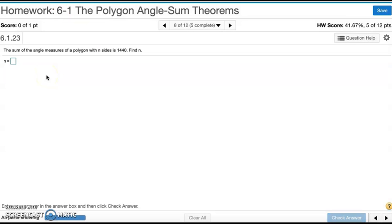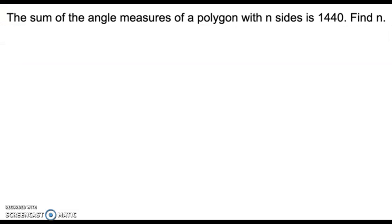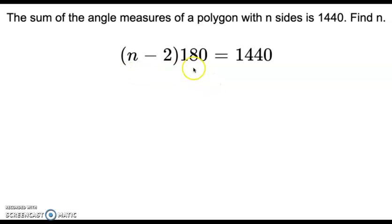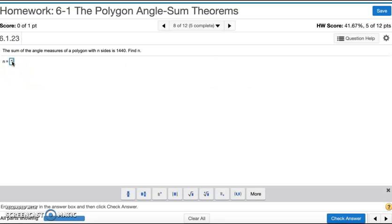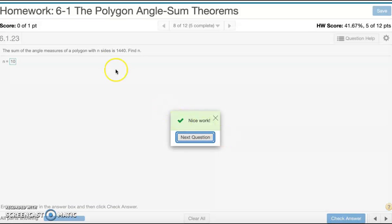Number eight: the sum of the angle measures of a polygon with n sides is 1440. Find n. We're given the sum and looking for the number of sides, so we're going backwards. We set 1440 equal to the formula n minus 2 times 180. Dividing both sides by 180 gives 8, then adding 2 to both sides gives 10. So the number of sides is 10.